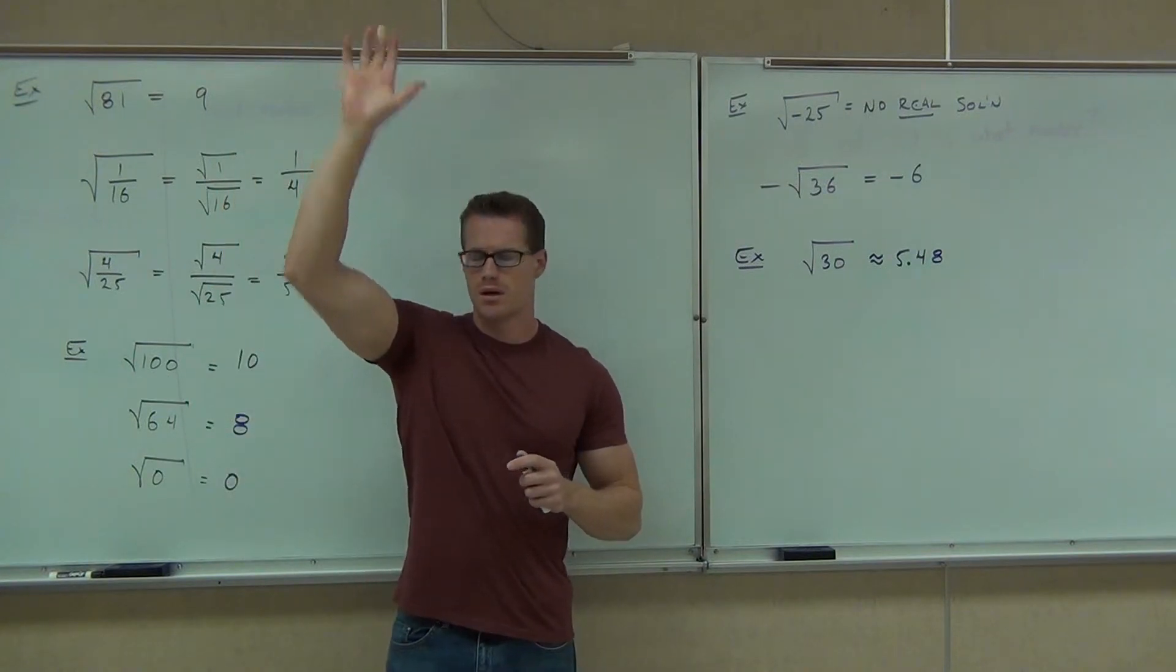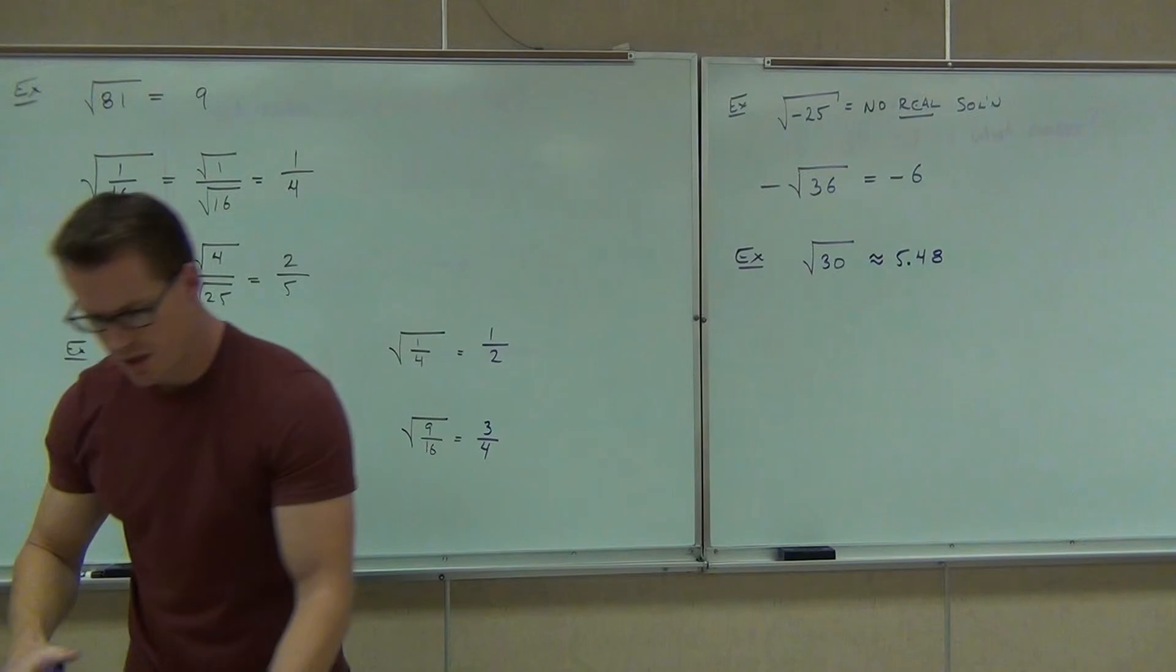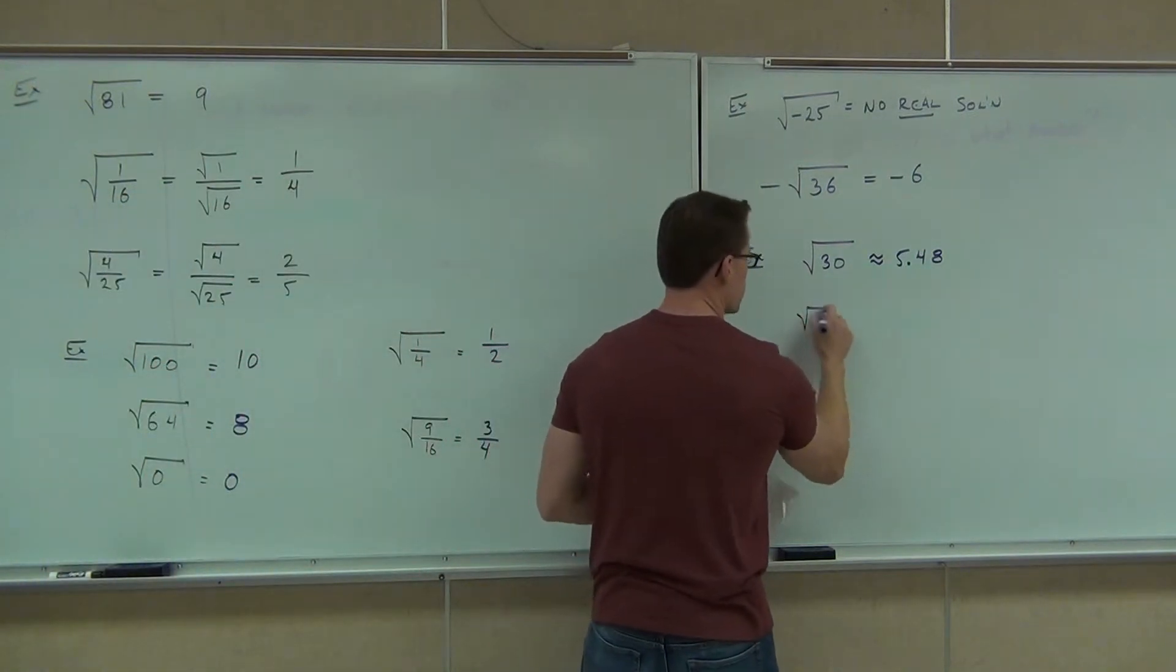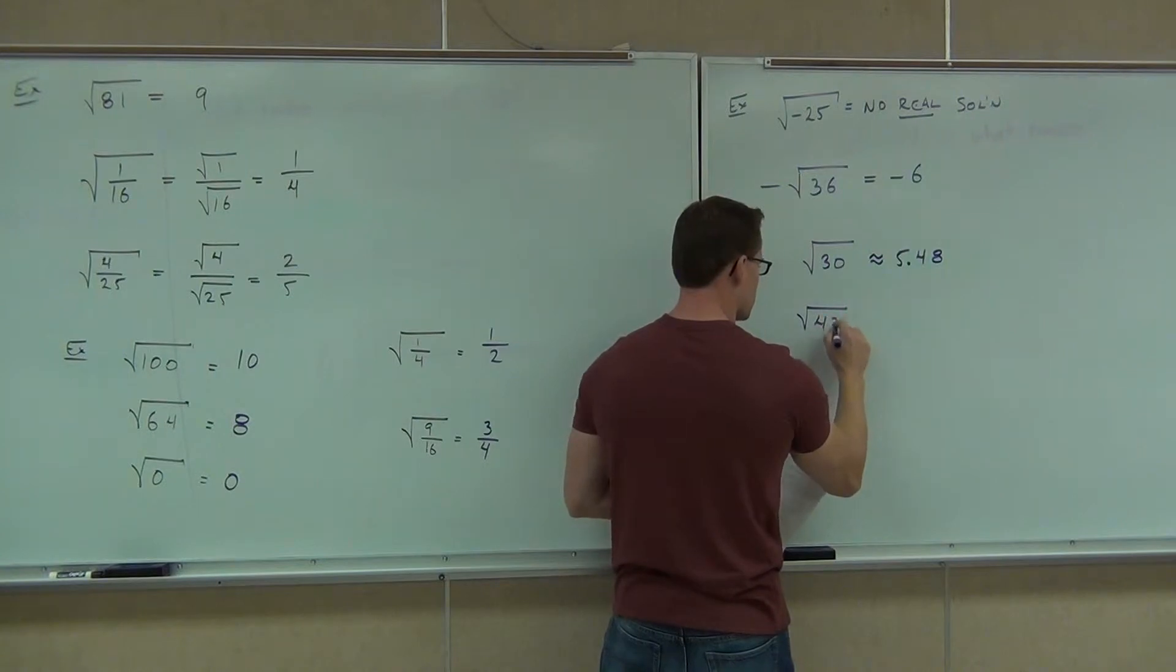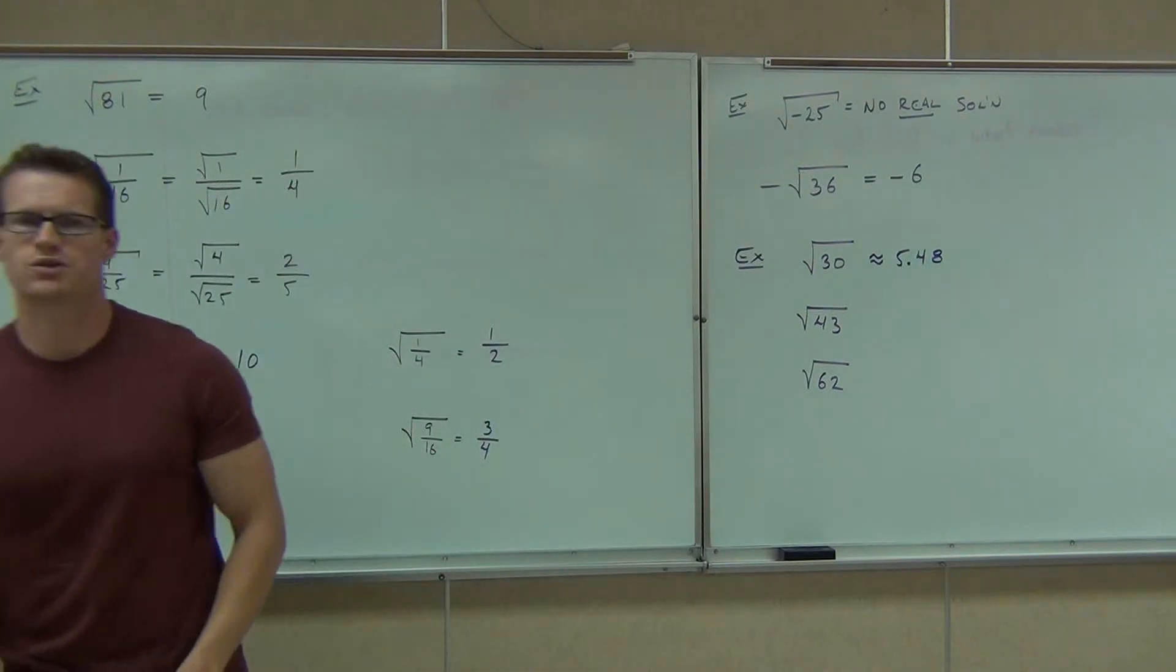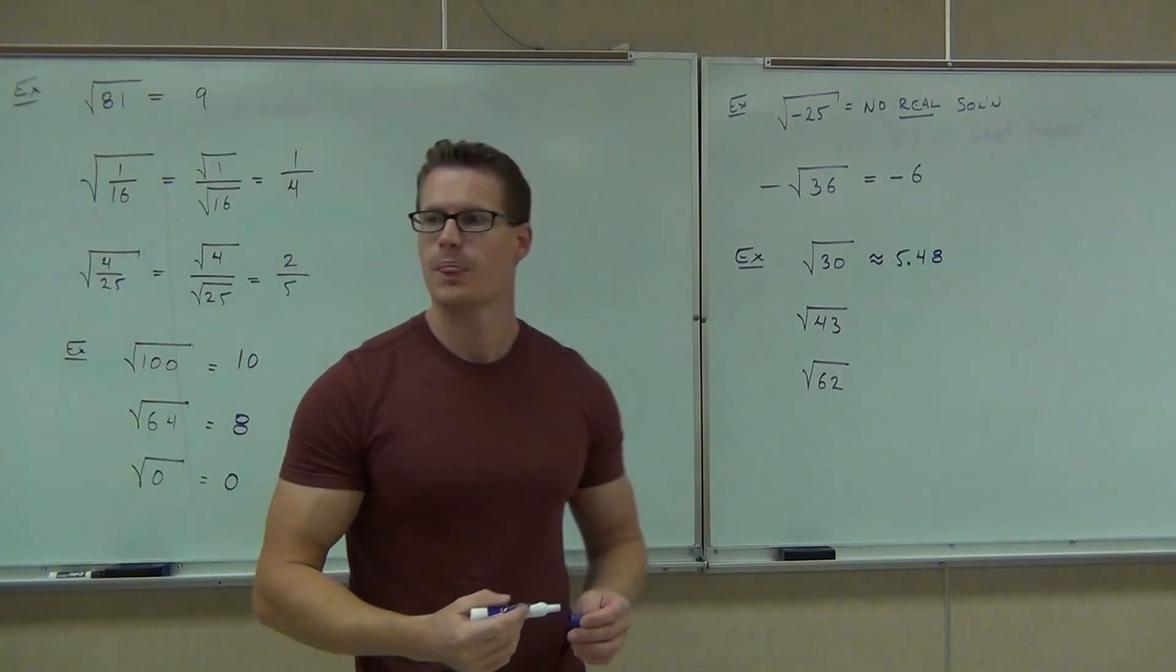Do you feel comfortable approximating some numbers? What do we do? Okay, here's what I'm going to do. I want you to try two of these on your own. I'll be walking around if you need help on how to use your calculator. So, do the square root of 43 and the square root of 62. Raise your hand if you need help figuring out your calculator.